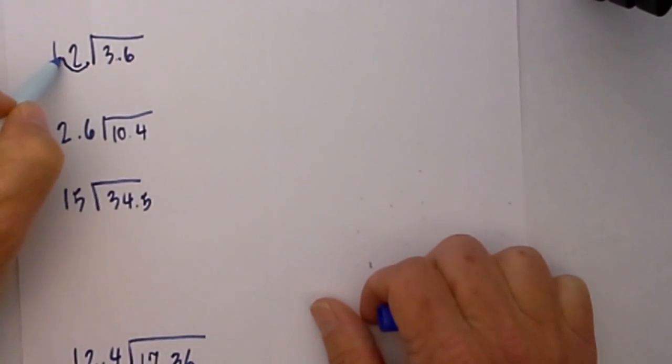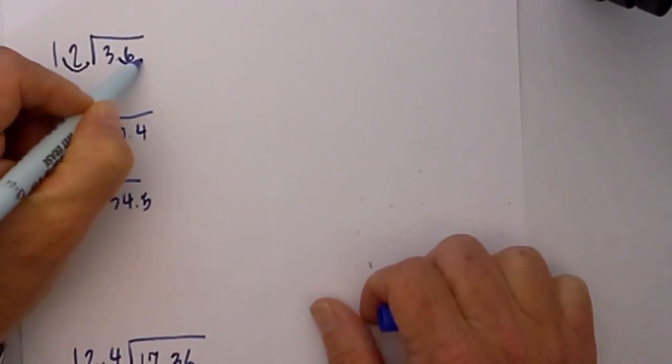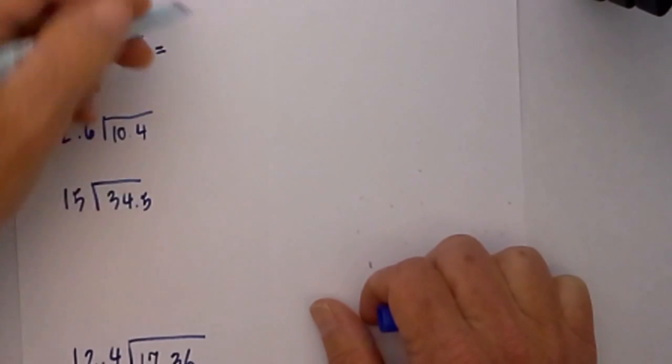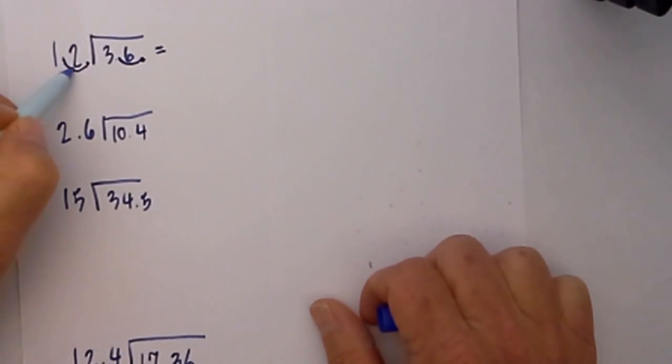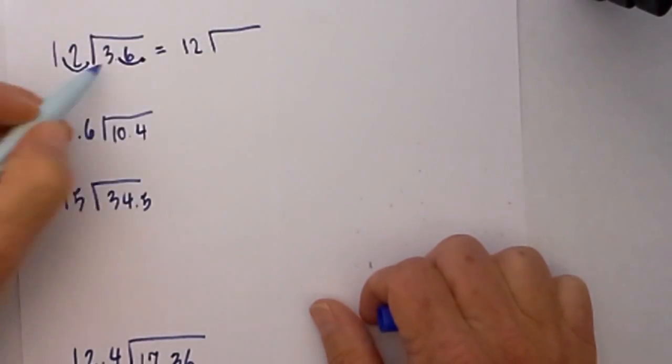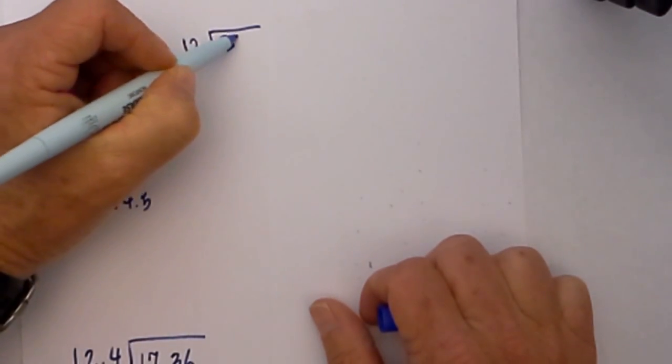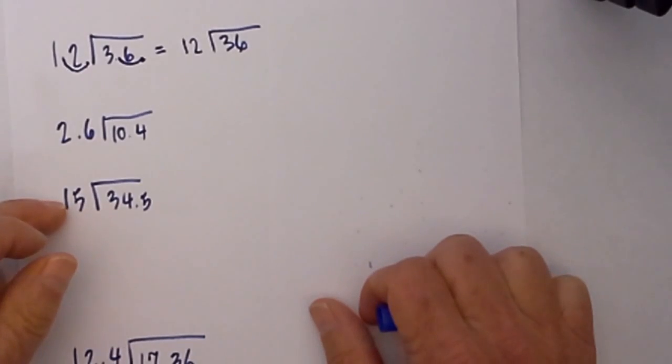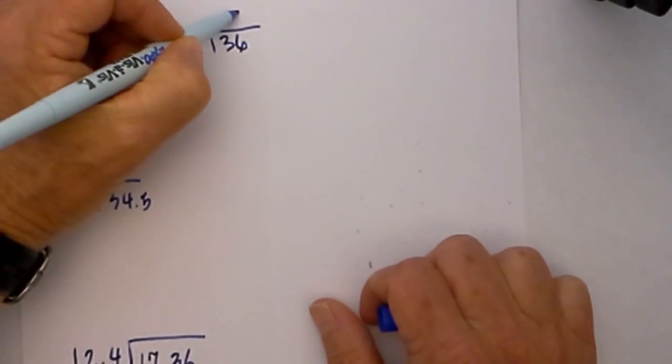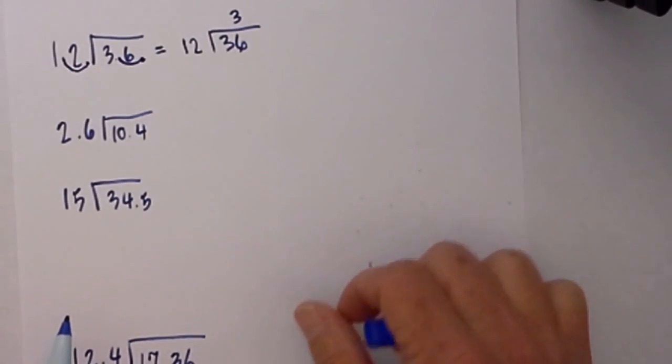What I like to do is just rewrite it. We move the decimal place one to the right, so that will become 12, and 3.6 will become 36. So now we just have 36 divided by 12, and I know 12 times 3 is 36.